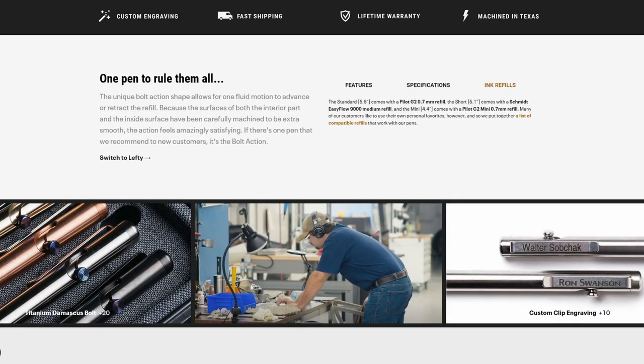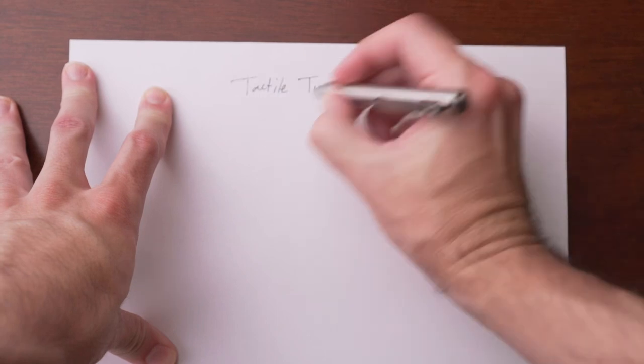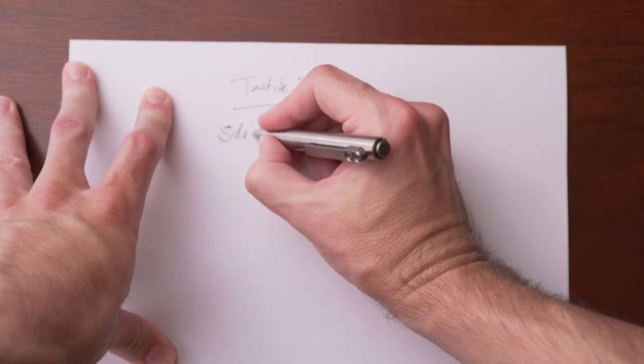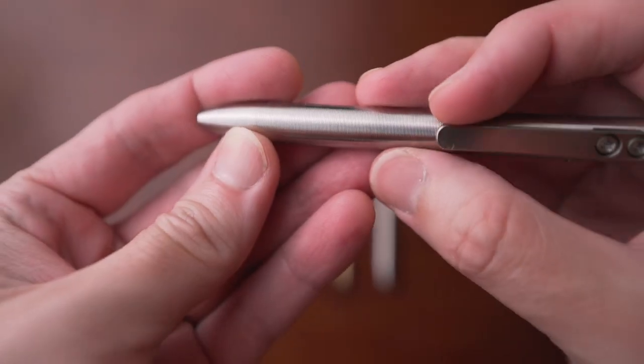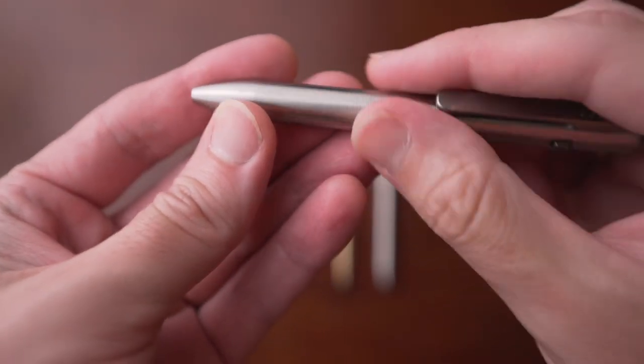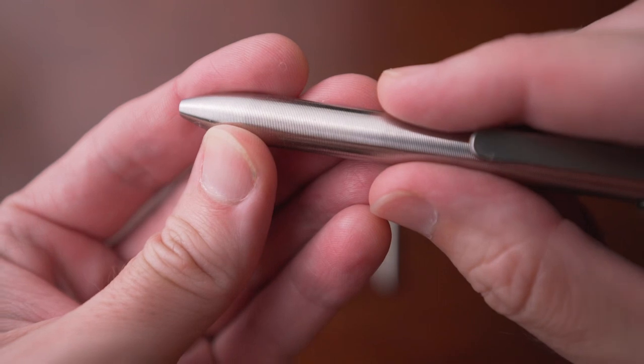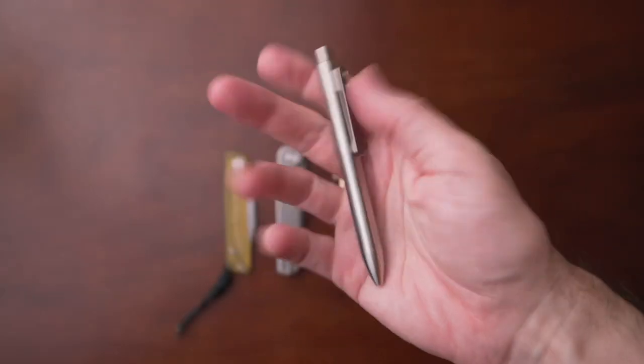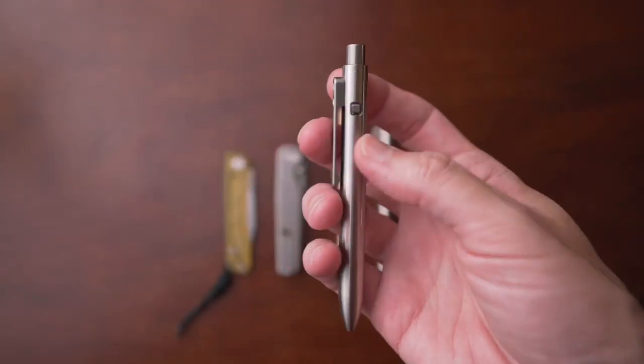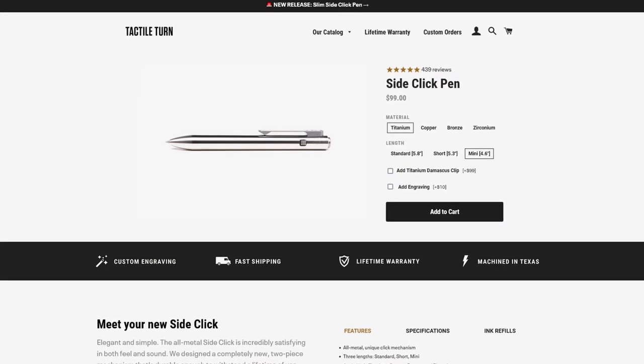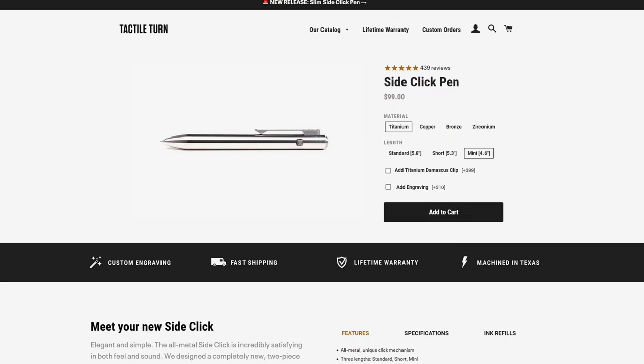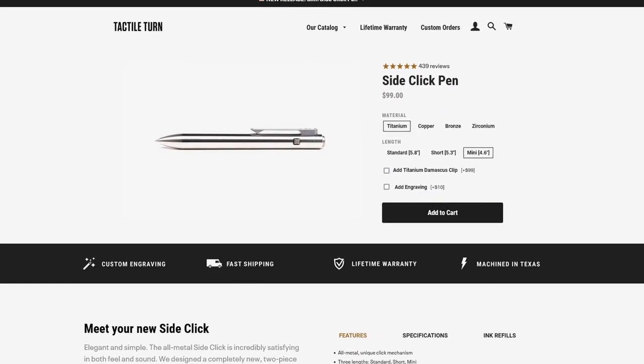This one comes with a Pilot G2 mini refill. The writing experience is just what you would imagine with a Pilot G2 pen. Very smooth, no wiggle in the tip. And of course, all throughout the sides, there are the micro grooves that is kind of their signature from Tactile Turn. The clip here is their milled clip. It has a nice stonewash on the outside of the clip. For the price on the titanium, copper, and bronze in any size is $99 for the pen. And the zirconium pen in any size is $249.